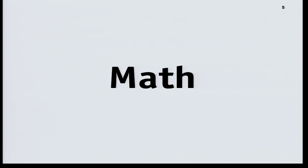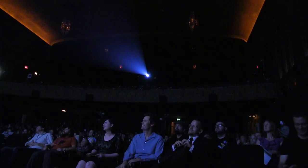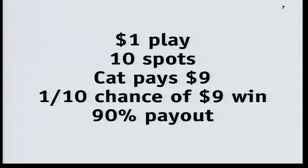To understand how this translates into the ways slot machines work, we need to get into math a little bit — but it's not too scary. Imagine a slot machine with one reel with ten stops: on nine of the stops there's nothing, and on one stop there's a lucky cat. It costs one dollar to play. When you hit the nine blank stops you get nothing, and when you hit the lucky cat you get nine dollars back. In a completely random world, over the long term this machine pays back ninety percent of what it takes in.